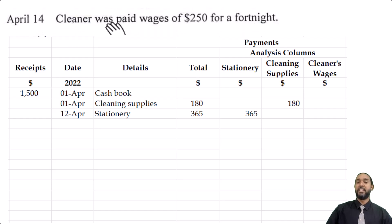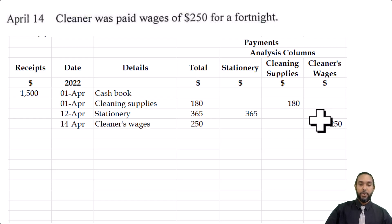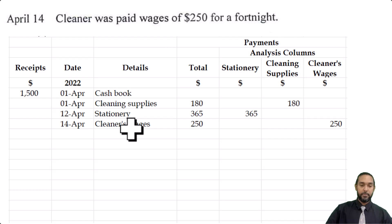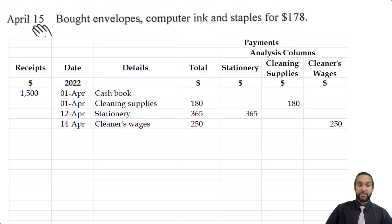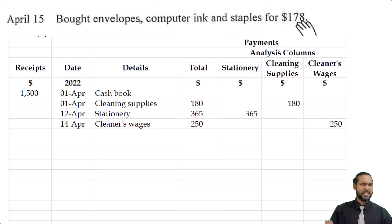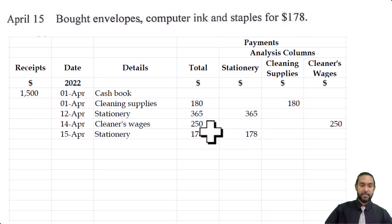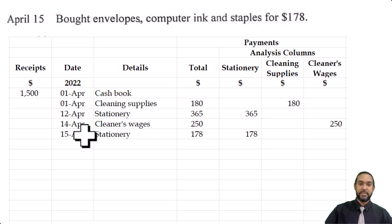On the 14th, a cleaner was paid wages of $250 for a fortnight — that goes in the cleaner's wages column, the total column, with details 'cleaner's wages' and date April 14th. On the 15th of April, envelopes, computer ink, and staples were bought for $178 — that's stationery — so $178 in the stationery column and total column, details 'stationery,' date April 15th.